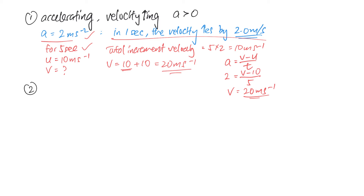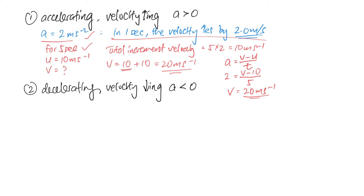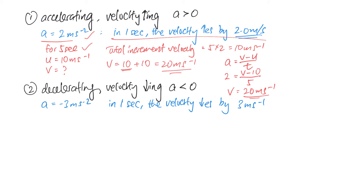The second scenario is when the car is decelerating — in other words the velocity is decreasing, or in layman terms the speed of the car is decreasing but still in a straight line with no change in direction. So the acceleration is less than zero, which has a negative sign. For instance, when the acceleration is minus 3 meters per second squared, it means in layman terms that in one second the velocity of the car decreases by 3 meters per second — it slows down by 3 meters per second every second.